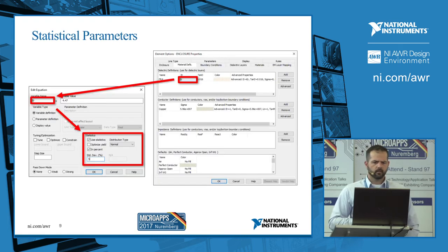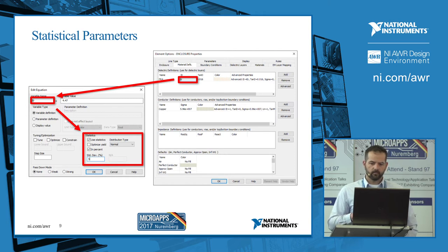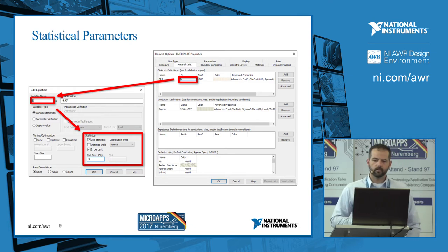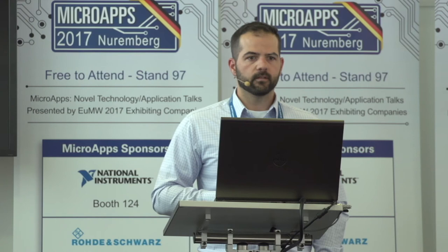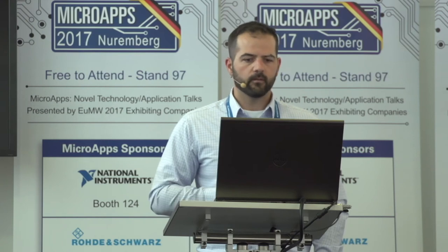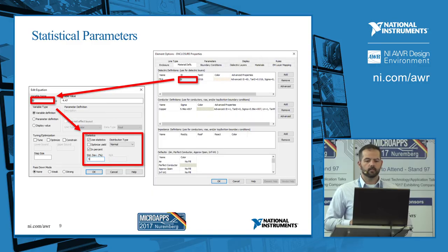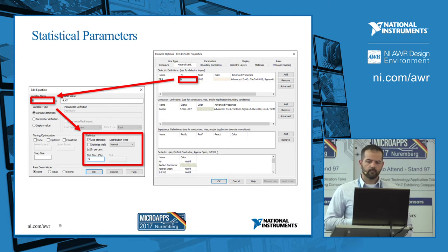The statistical parameters for your components or your dielectric are all extremely easy to set up for yield. In our simple example, the dielectric constant has a 5% variation with a normal distribution. If the material for each layer happened to be a different dielectric value, or for some reason have a different yield, those are all variables that you could set up with their own statistical distribution as well. So setting up statistical analysis for basic parameters — your dielectric and your component values — is really easy in Microwave Office.